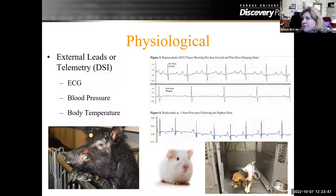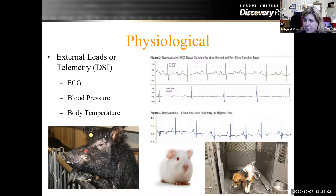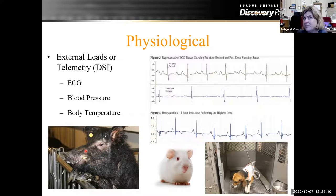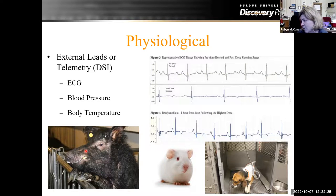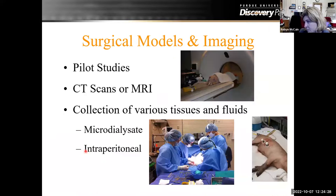There are also opportunities for physiological data. We can do telemetry — I don't have the telemetry devices here, but if someone has a device they want to use, we can hook that up to our system. We can do ECG, blood pressure, and body temperature with external ECG leads. I've also done some pills that basically read the pH of the gastric system as it goes from the stomach into the intestines, and we've had some interesting data from that as well. A lot of different physiological data can be taken from these animals.